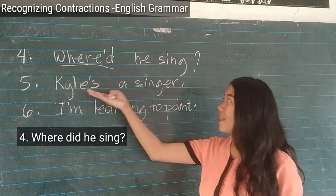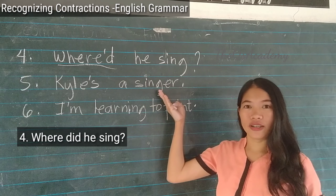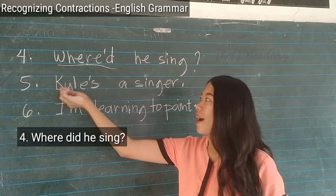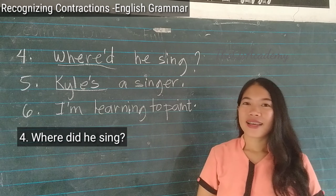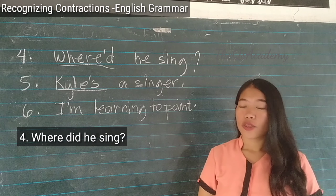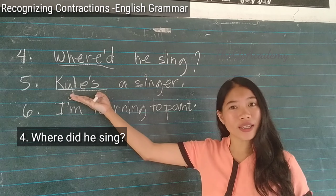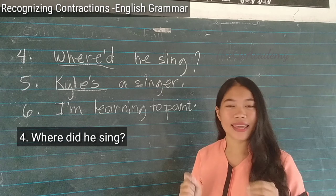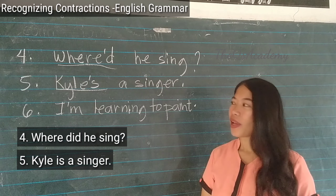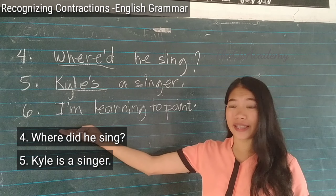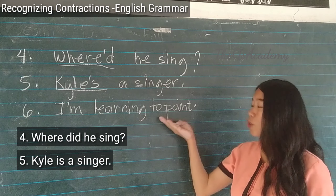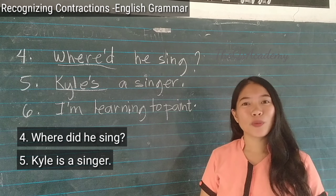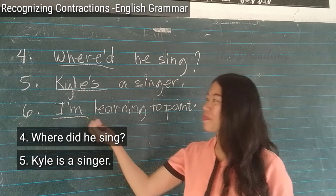Number five: 'Kyle's a singer.' The contracted word is 'Kyle's', and the full form is 'Kyle is a singer.' Number six: 'I'm learning to paint.' The contracted word is 'I'm', and the full form of 'I'm' is 'I am'.